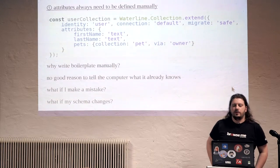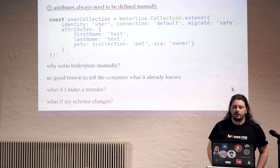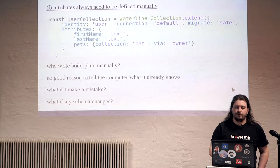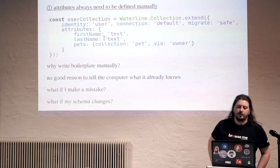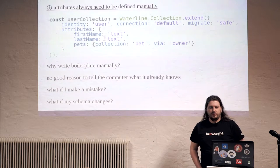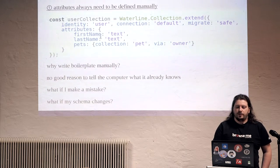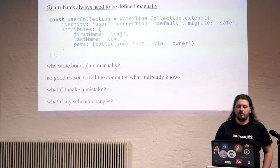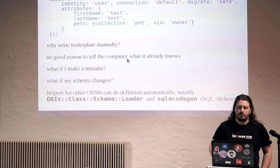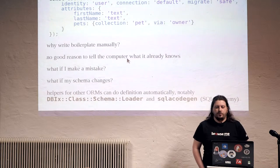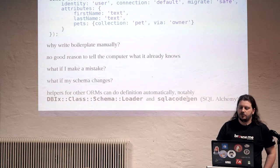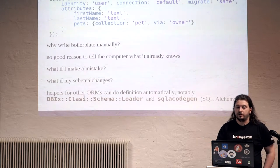First, I want to go into detail about data definition. These kinds of attributes always need to be written manually. Why? There's no good reason, because the database itself already knows about the tables and columns it has. What if I make a typo or get the type wrong? What if my database changes and my code is still in the old version? These are big problems. Other ORMs solve this by dumping code with a certain command, or even more conveniently, you just connect to the database and the rest happens magically — you do not need to do this manually.